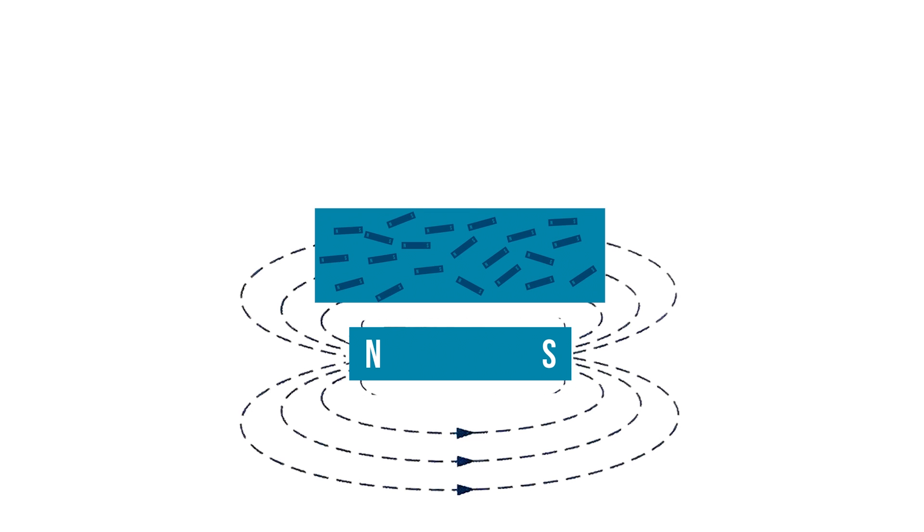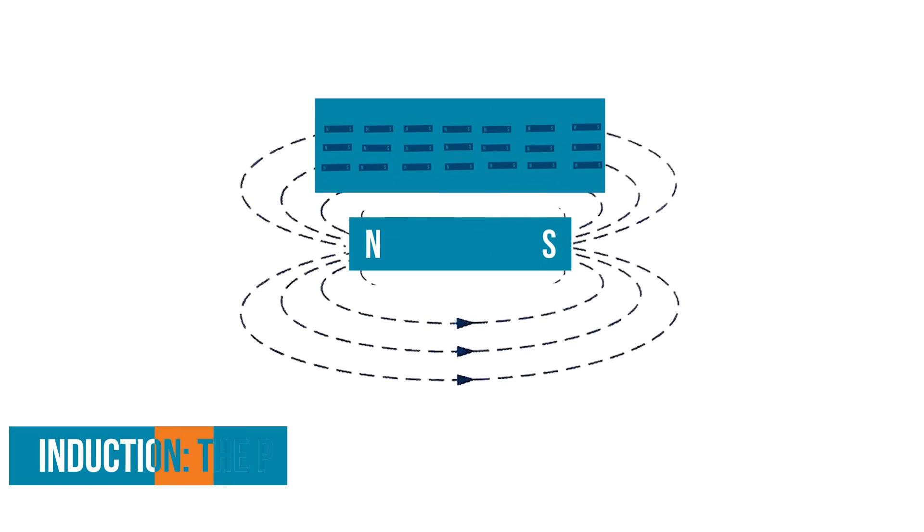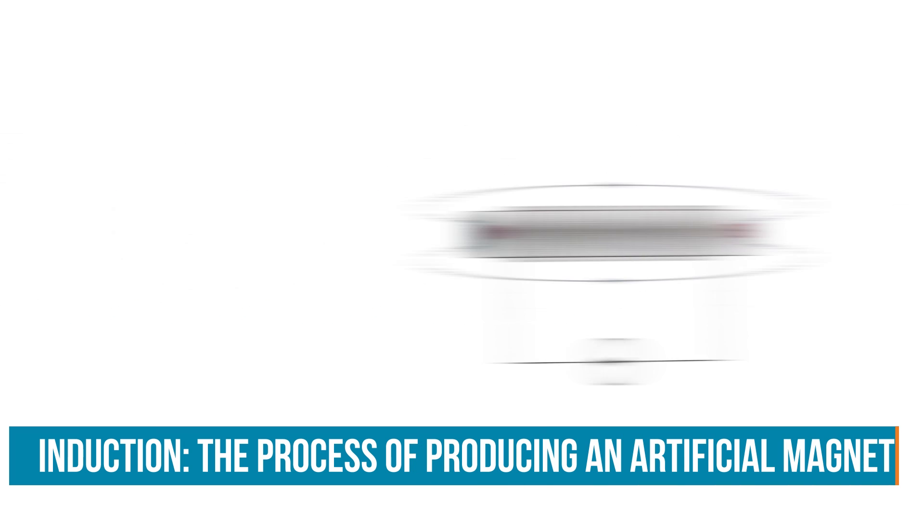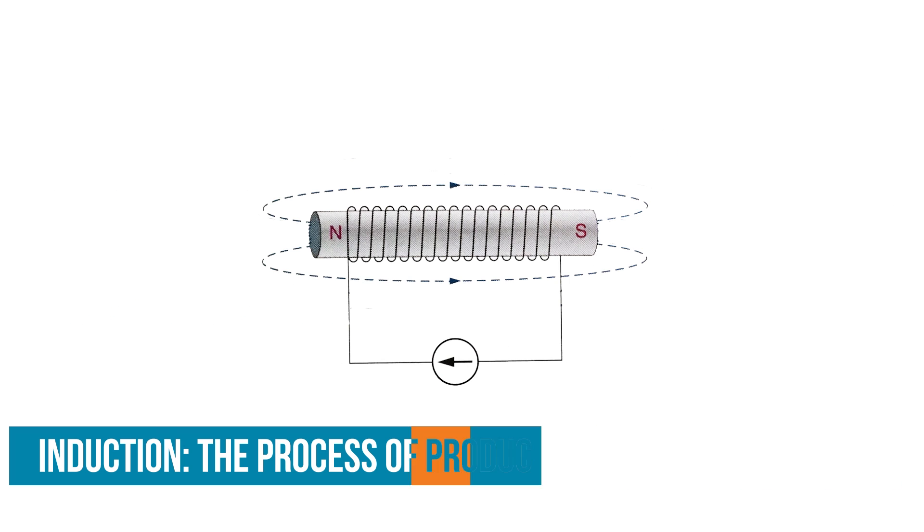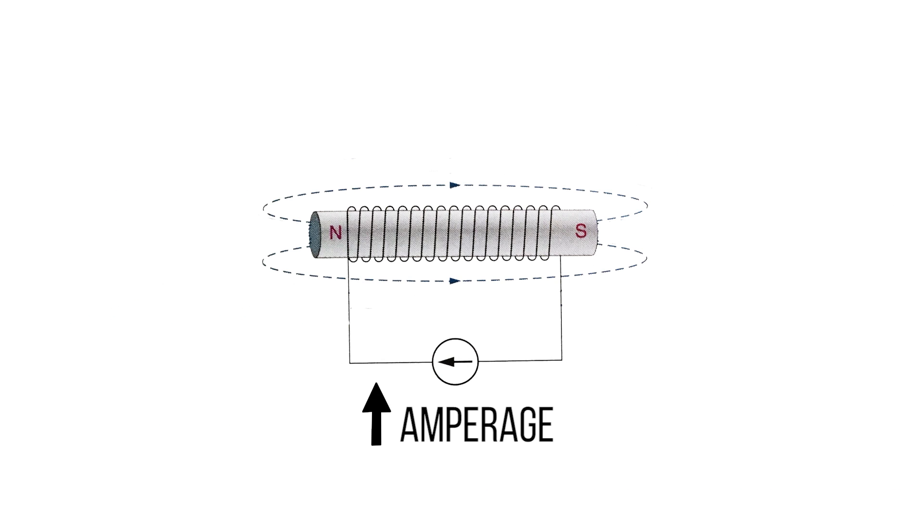Electromagnets work by passing a current through a wire. When that wire is wrapped in a coil, the magnetic flux adds together creating a stronger magnetic field. If we use iron for the core of the coil, that piece of metal also becomes magnetized as long as current is flowing through the coil.